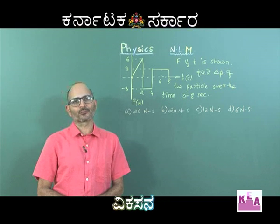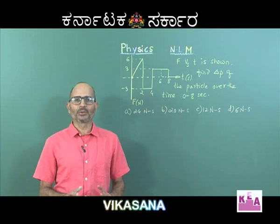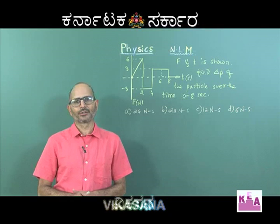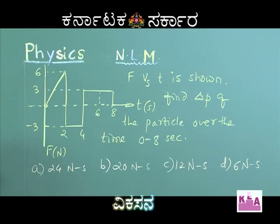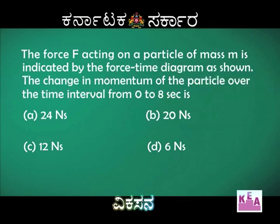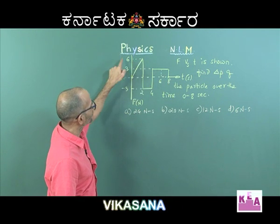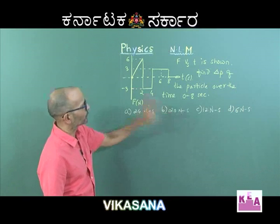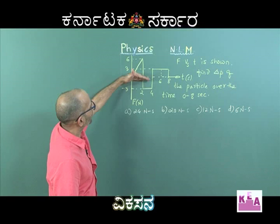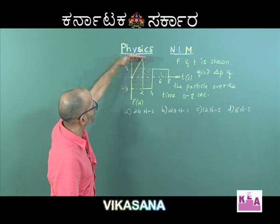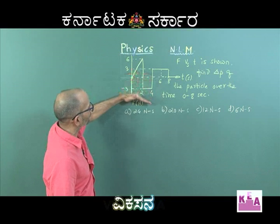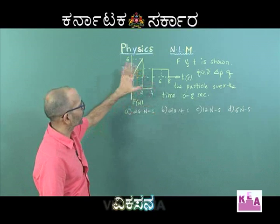Another important aspect of Newton's laws of motion is impulse. Impulse is always the change in momentum that the particle has suffered. Here a force versus time diagram is given, so the area under this diagram directly gives you the change in momentum, or the impulse. The areas above the time axis are positive and those below the time axis are negative.